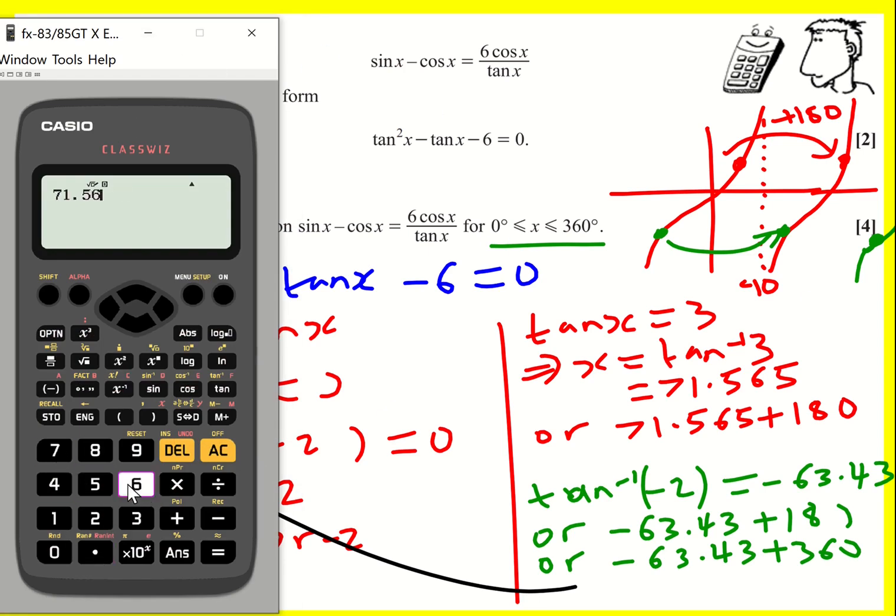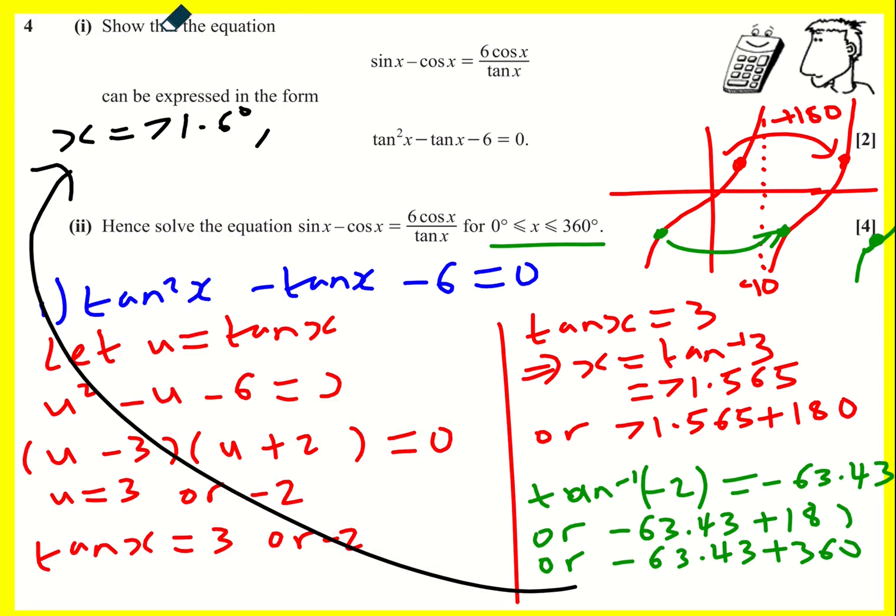Now it's best not to round it too early, even though it won't actually matter here. We'll get away with it. But if I add 180 degrees, I'll get 252 degrees.